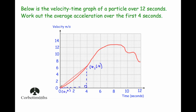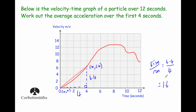Our run will be from 0 to 4, so our run is 4. Our rise will be from 0 up to 6.4, so that's 6.4. The gradient equals rise over run: 6.4 divided by 4, which gives us 1.6.